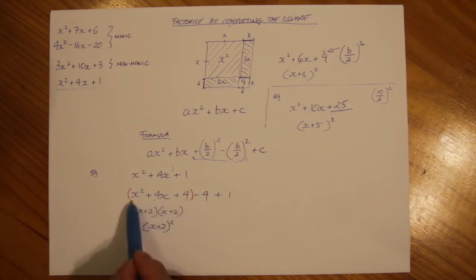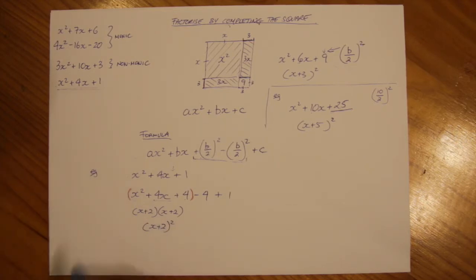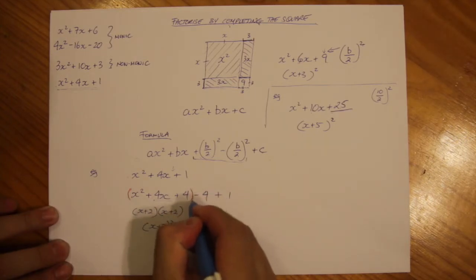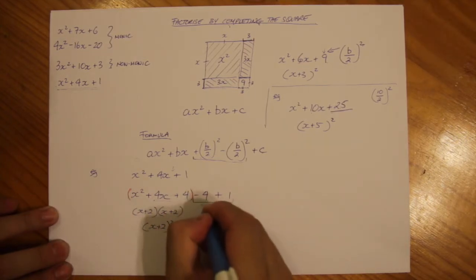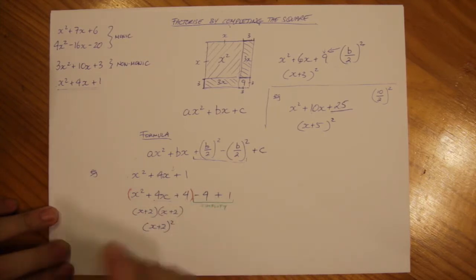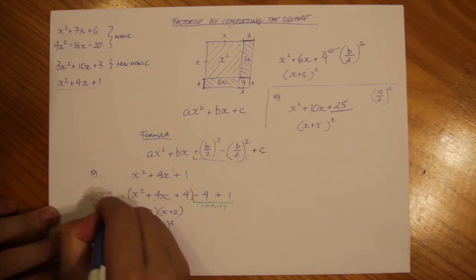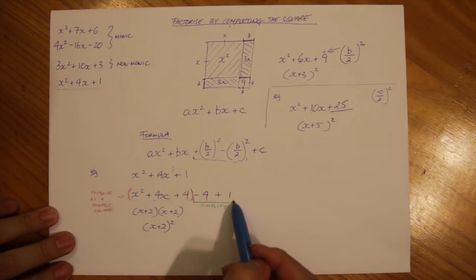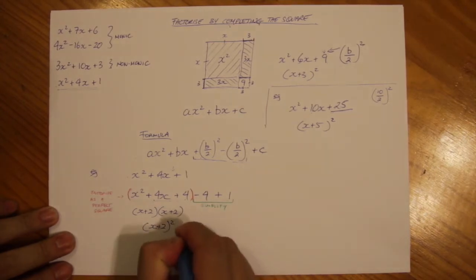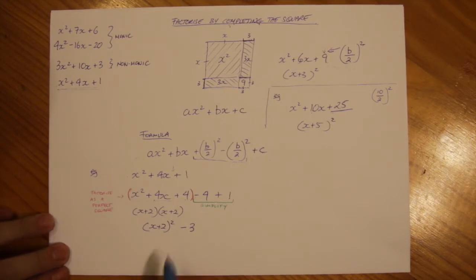We want to factorise the first three terms as a perfect square — that's what we have. We then simplify the remaining part: minus 4 plus 1 is minus 3. So now we have x plus 2 all squared minus 3.